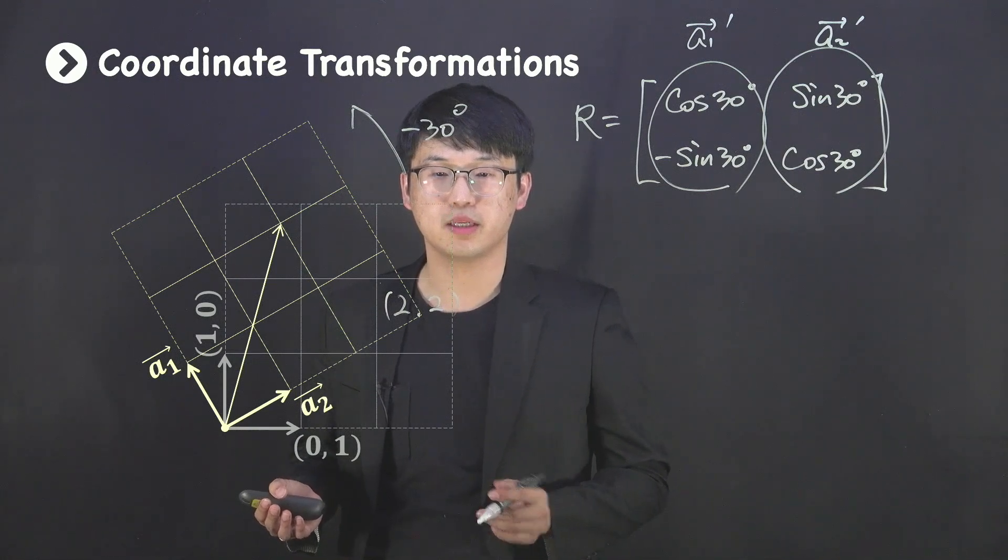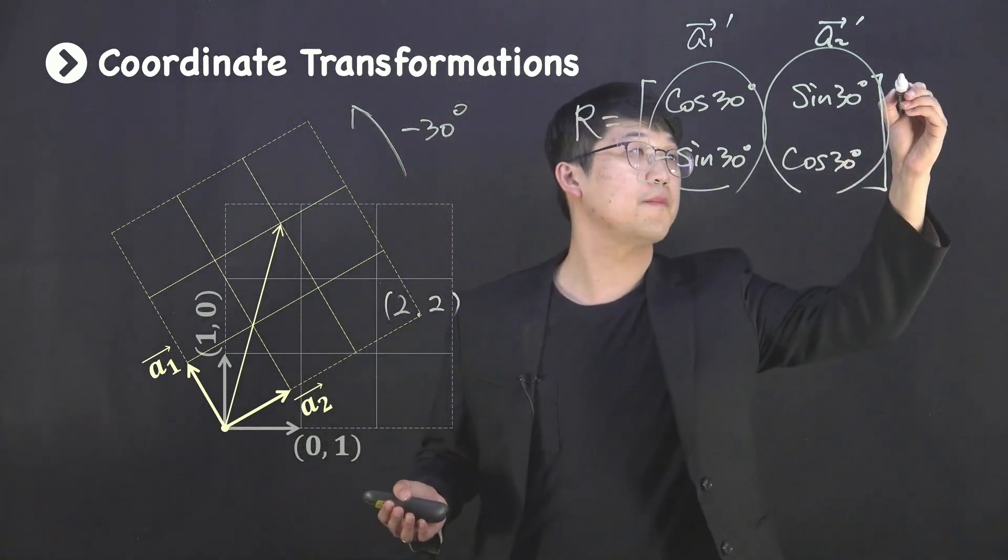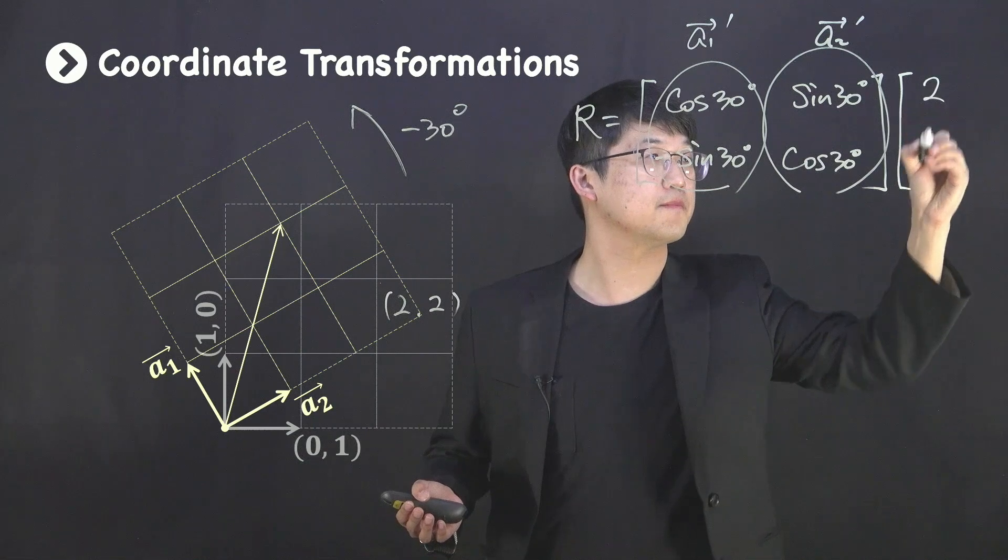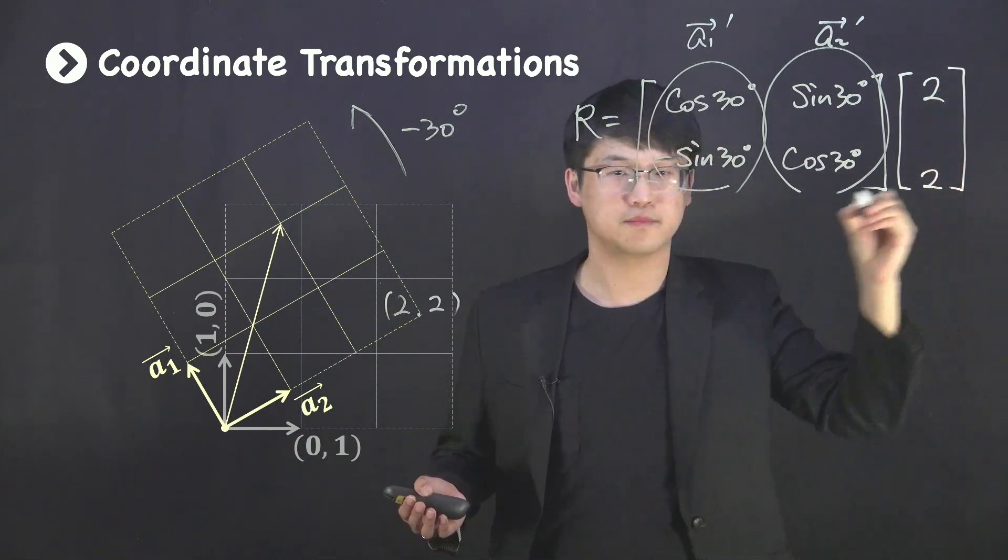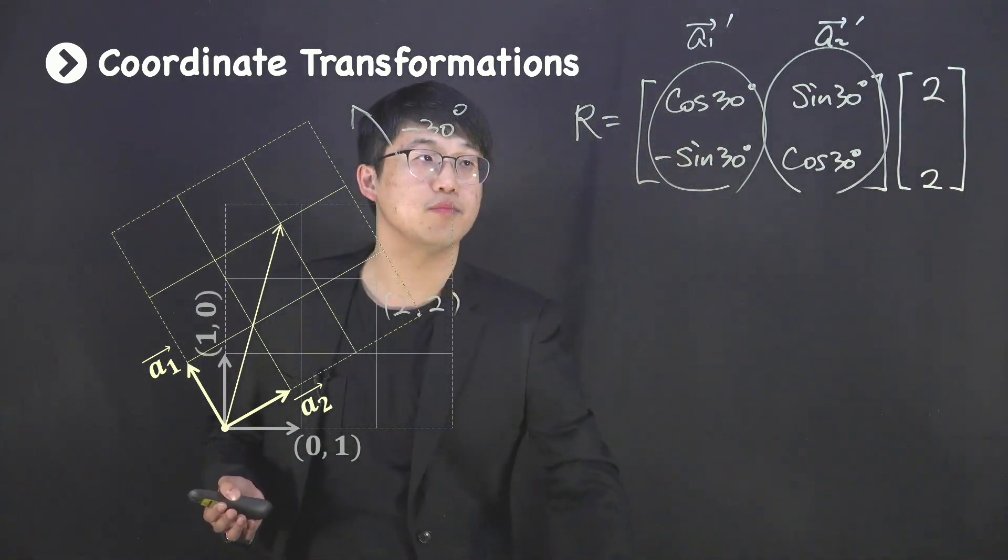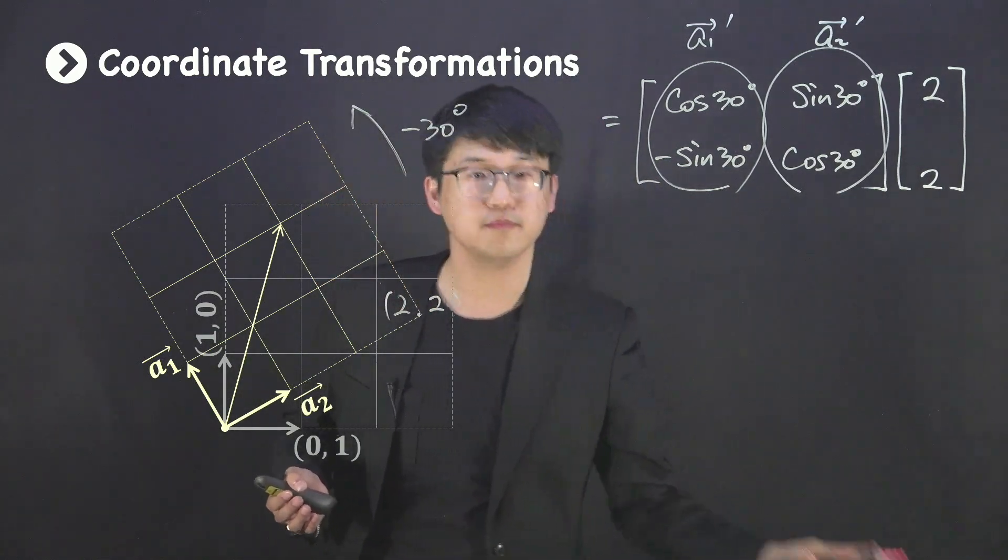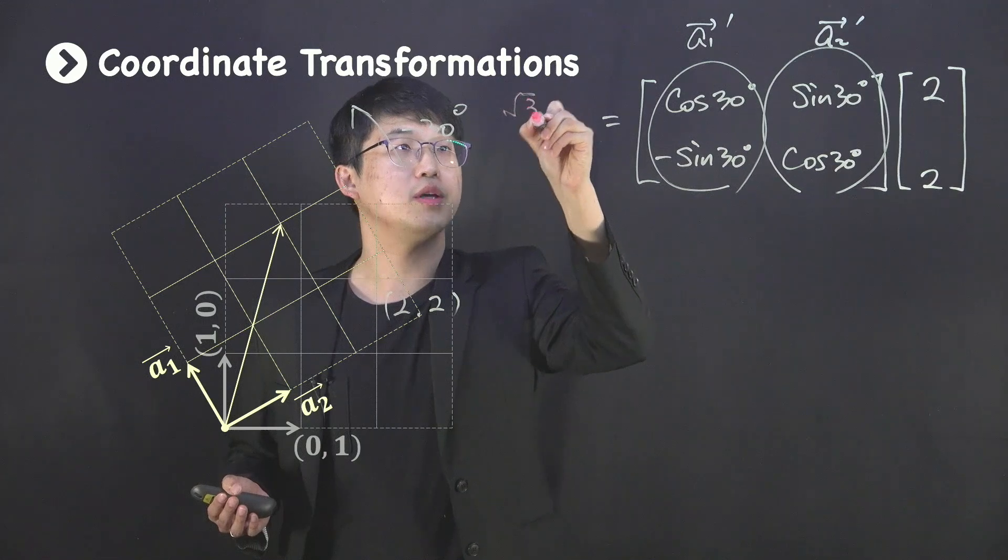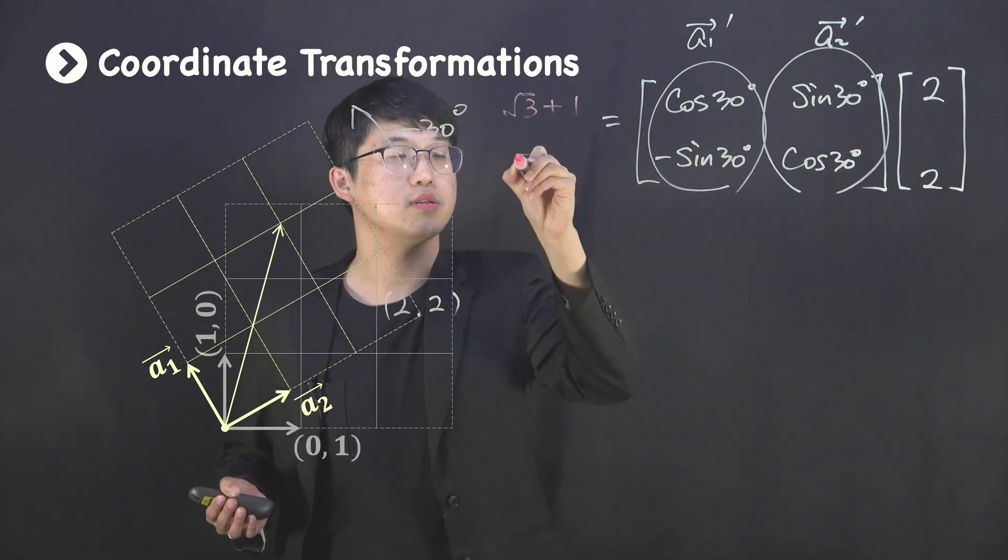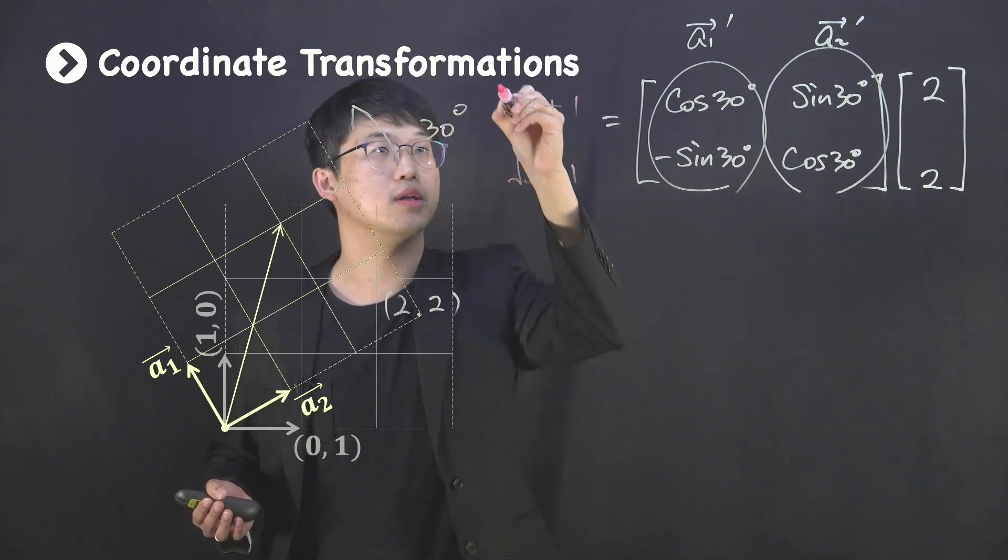Also, it is easily seen that the vector is now moved to (√3 + 1, √3 - 1).